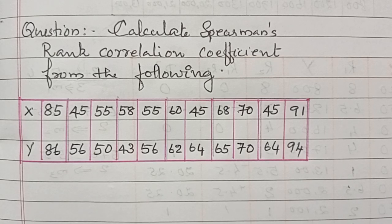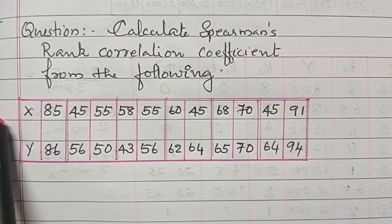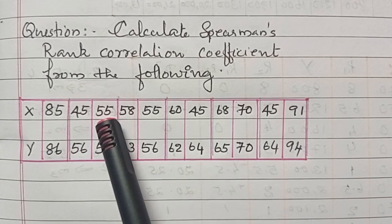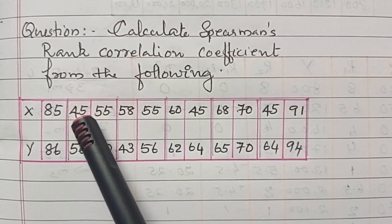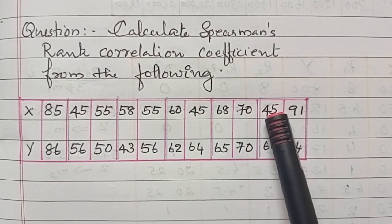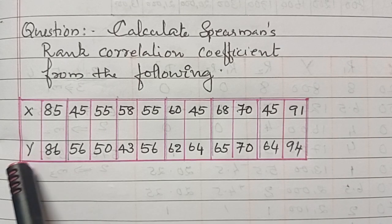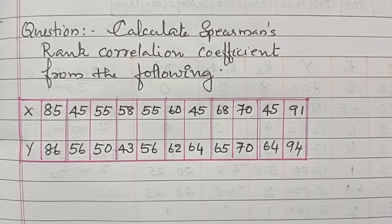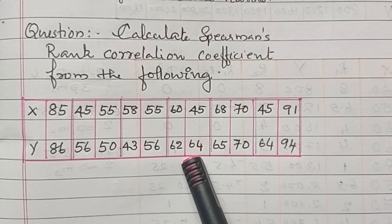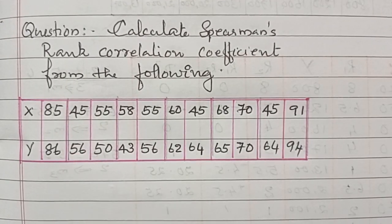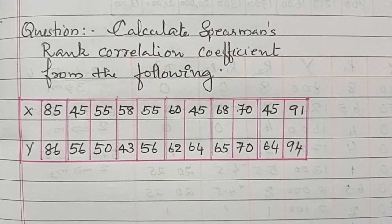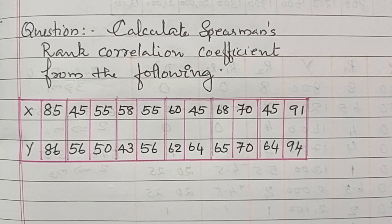We can see in the X variable, the number 55 is repeating 2 times, and 45 is repeating 3 times. In Y, 64 is repeating and 56 is also repeating. So we have to use the formula for rank correlation when the ranks are repeating.